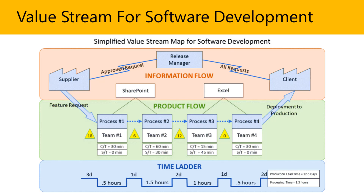Let's take a look at the simplified value stream map for software development, which gives you an illustration of what we just talked about. You'll notice it's divided into three sections. The first section is the information flow itself. With so much information packed into the value stream map, there are terms and features that need some explanation. If you're a beginner enterprise architect just starting on this journey, this may seem a little overwhelming, but not to worry — we're going to break everything down step by step. While we provide standardized VSM features, keep in mind they may be modified to achieve specific objectives. Let's start with the information flow, which is the first section.